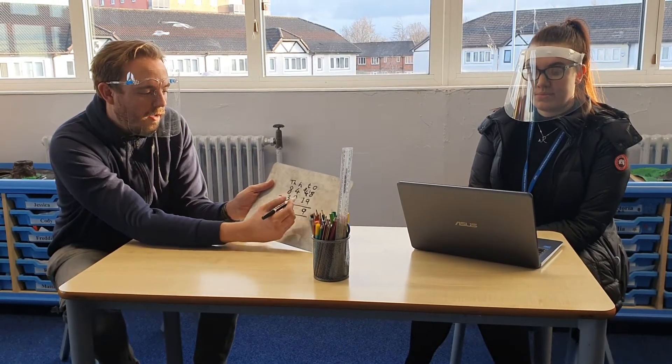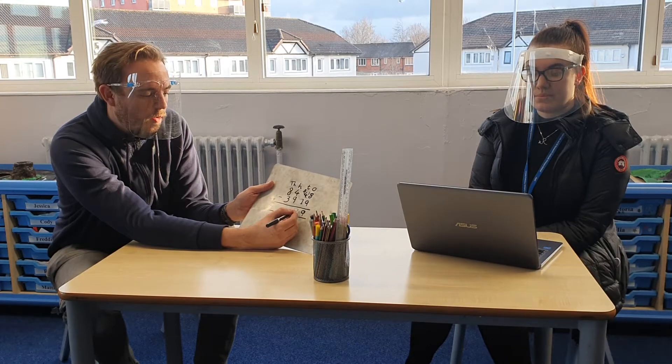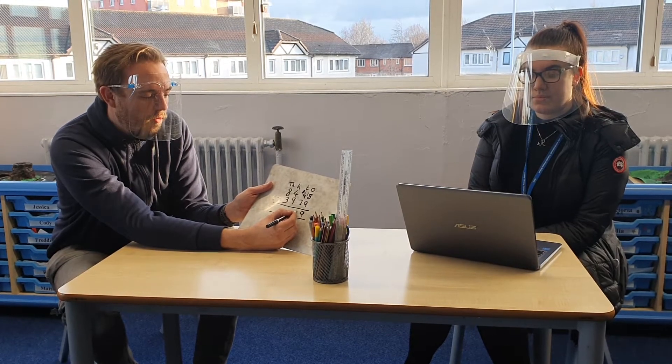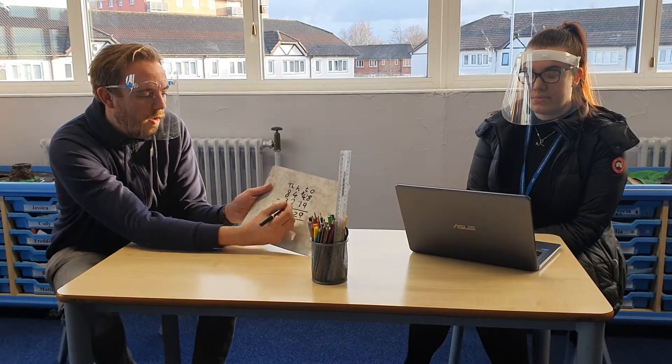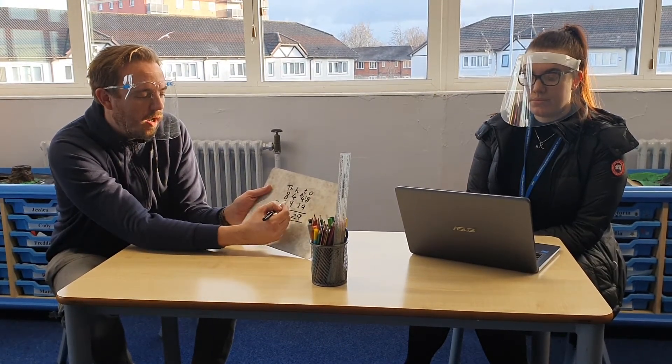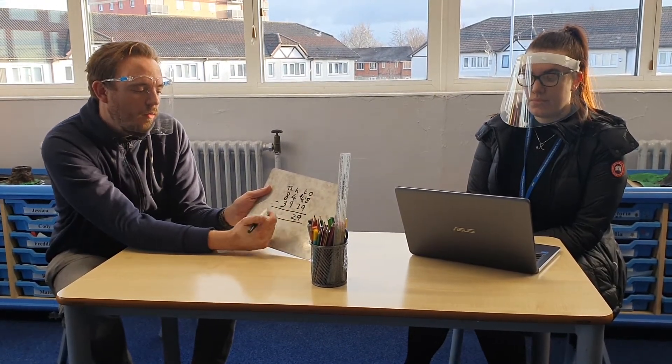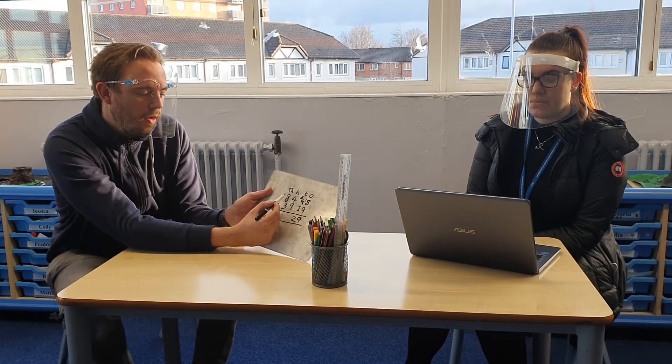Then I've got three tens to take away one ten, which is two tens. Then I've got four hundreds to take away nine hundreds, which I can't do.